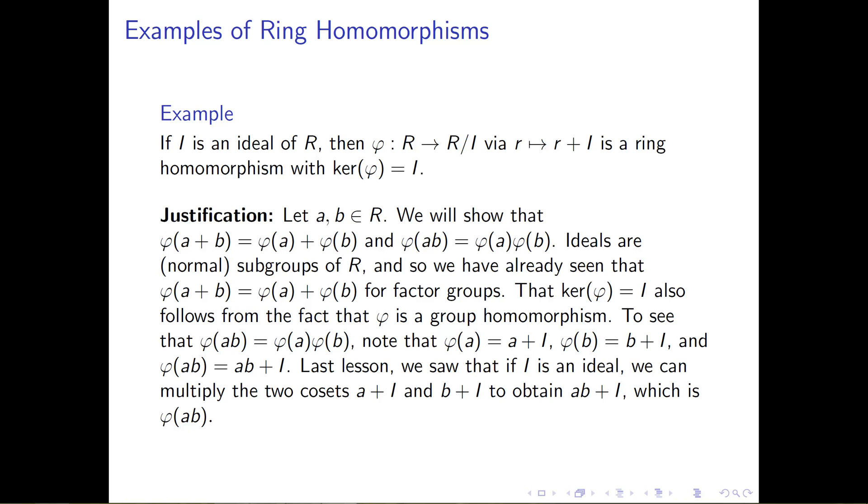That is, the quantity a plus I times the quantity b plus I in this factor ring is equal to ab plus I, and it's this that makes, you can check from everything we've got written on here, that φ of the quantity a times b is equal to φ of a times φ of b.